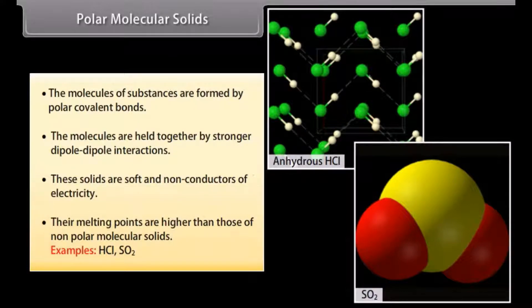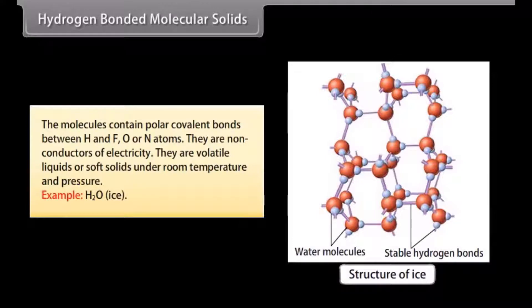Examples. The molecules contain polar covalent bonds between H and F, O, or N atoms. They are non-conductors of electricity. They are volatile liquids or soft solids under room temperature and pressure. Example: H2O, ice.